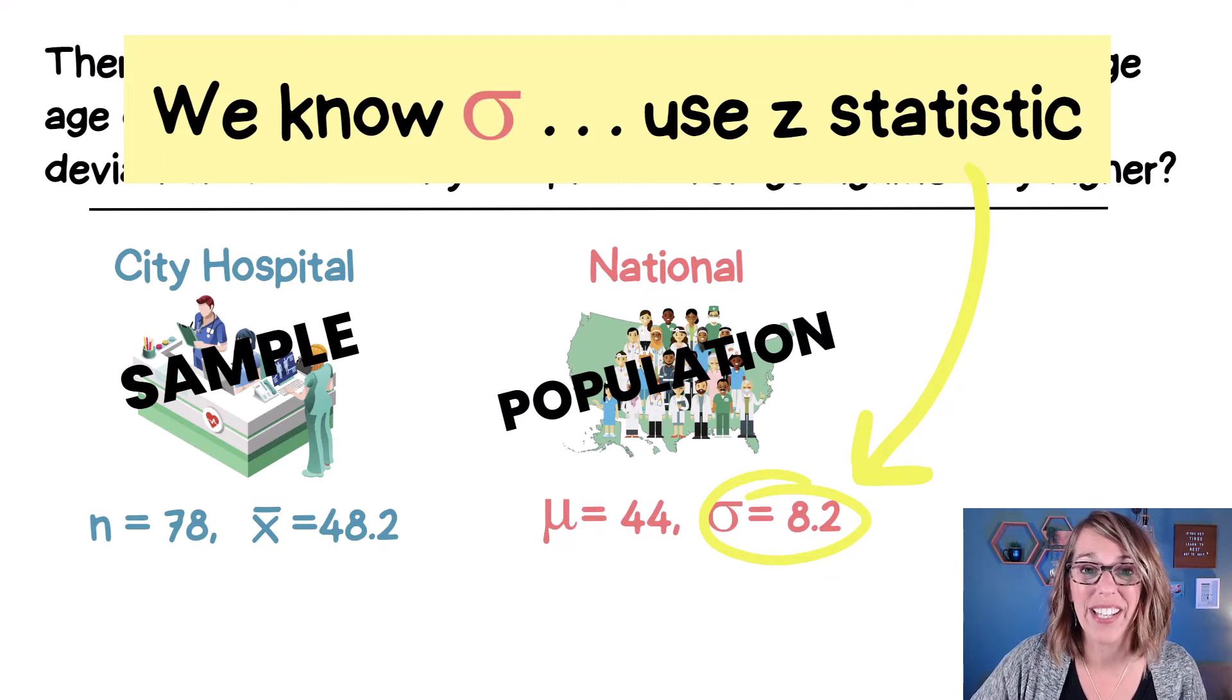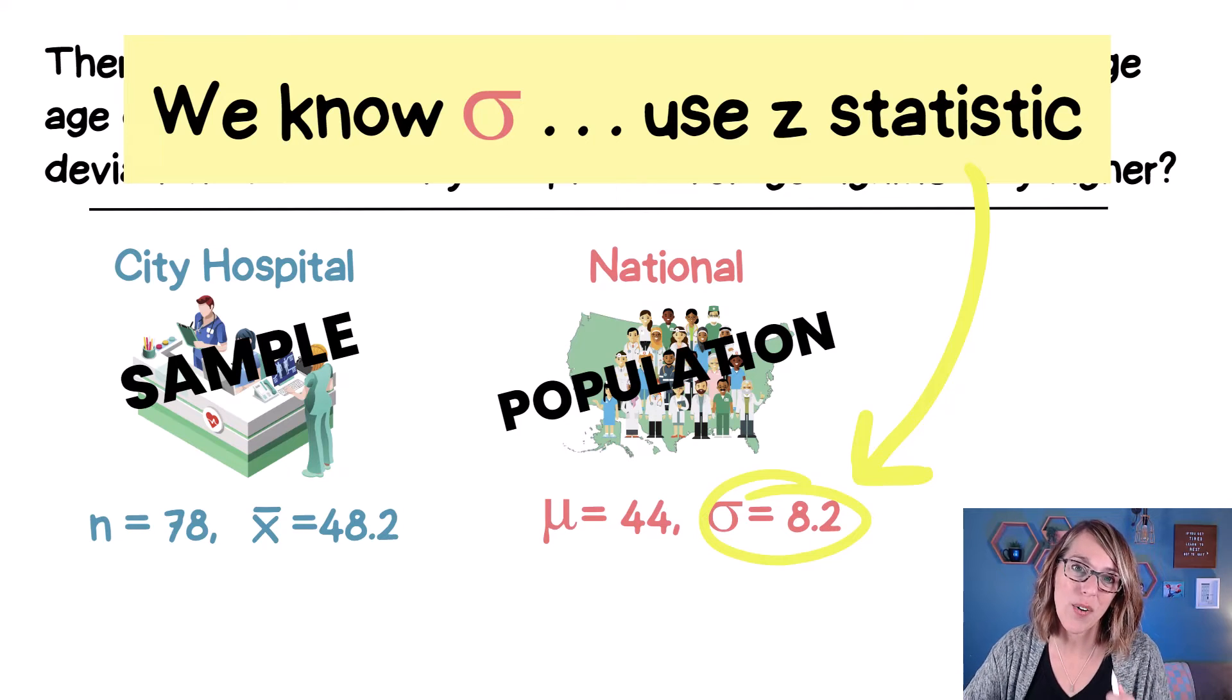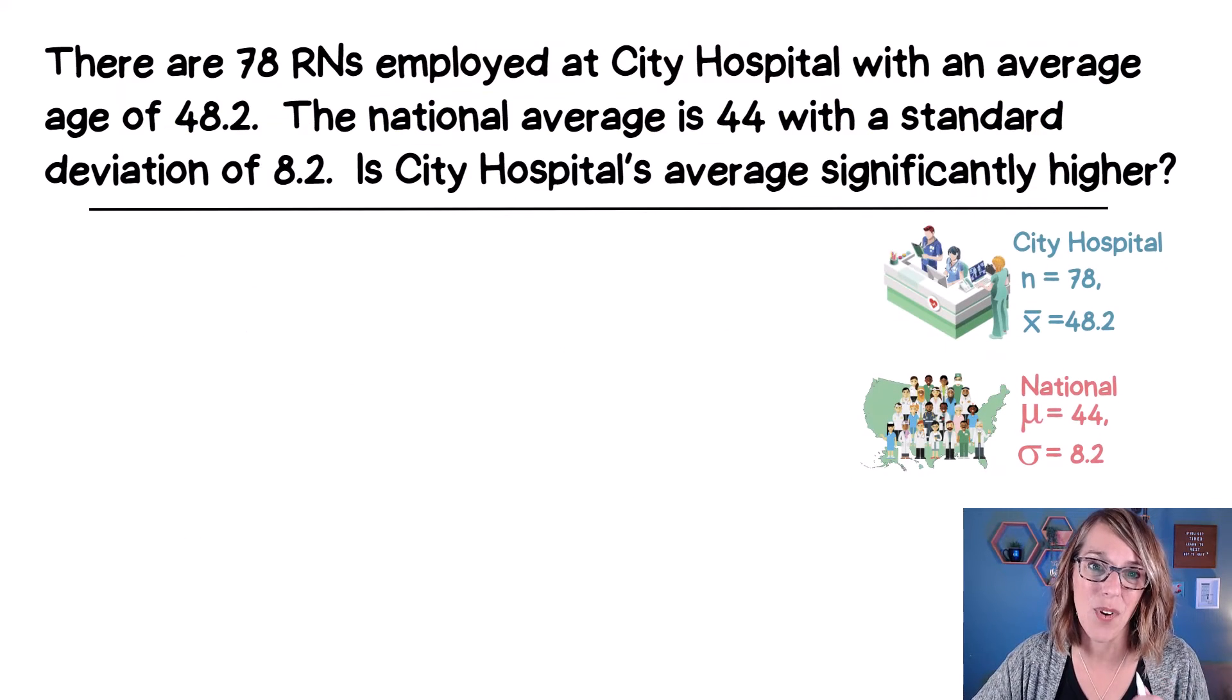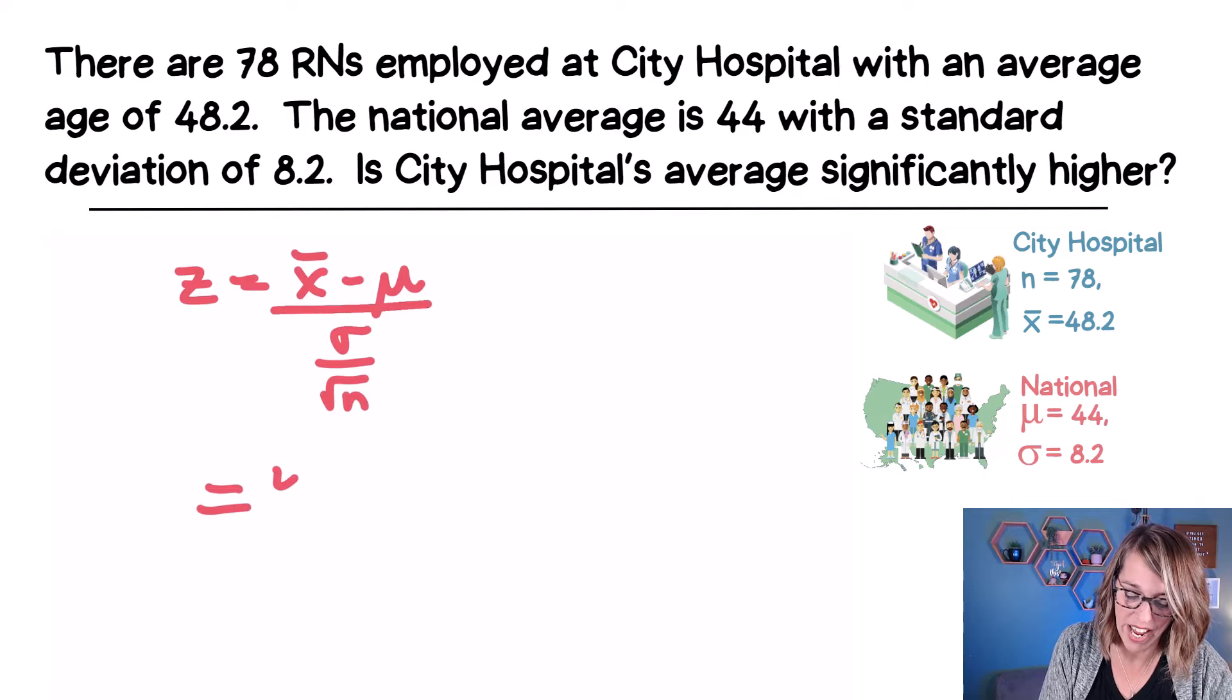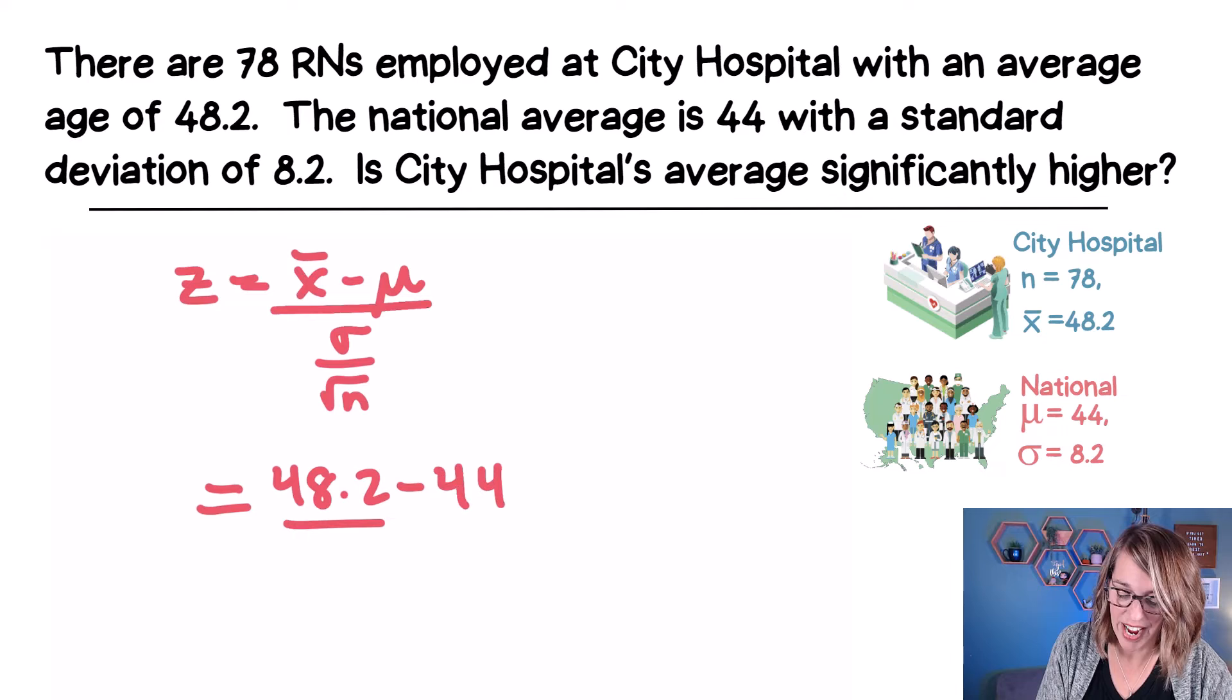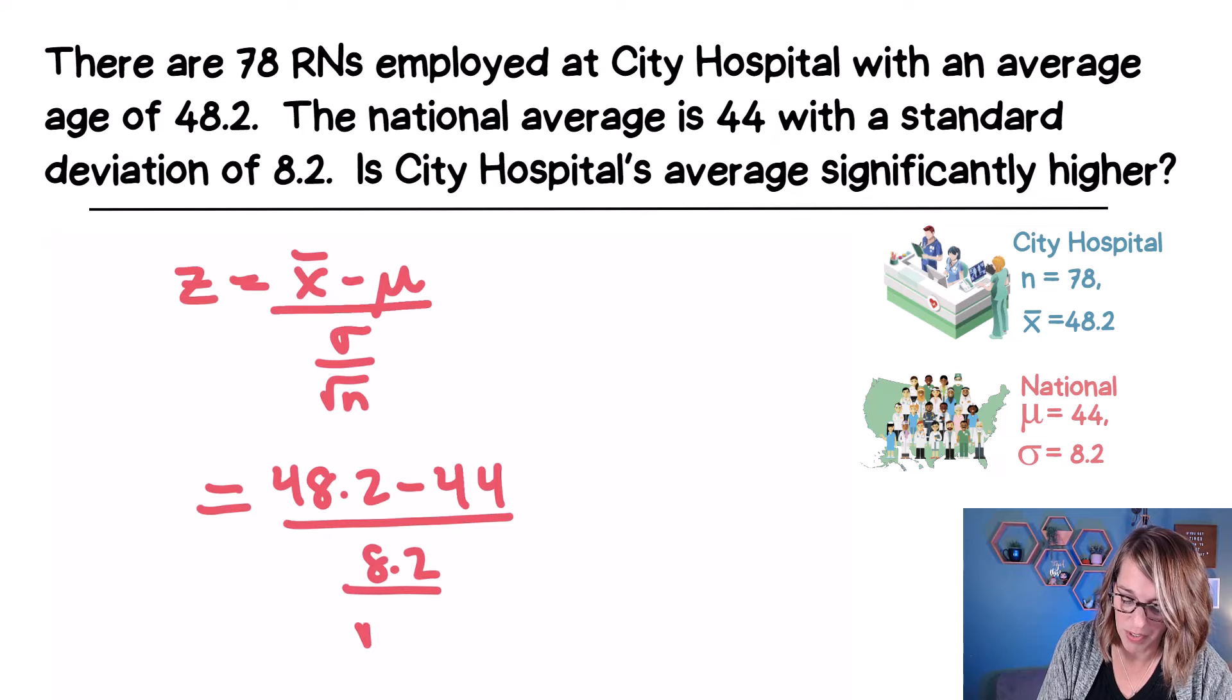So we do have that population standard deviation, and we're going to go ahead and apply the Z formula. Here's what that looks like. So Z is equal to x bar minus mu divided by that standard deviation over the square root of N. So we have 48.2 minus that 44, the national average, divided by the standard deviation for the national value, which is 8.2, all over the square root of that sample size of 78.